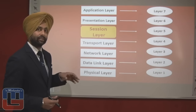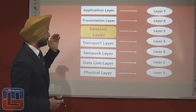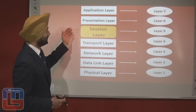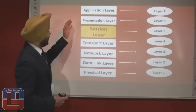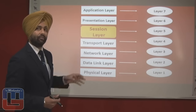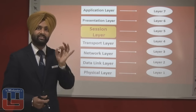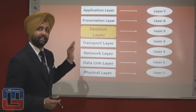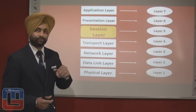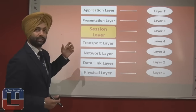Let's view the 7-layer architecture of the OSI model and see where the session layer is located. The first layer is the physical layer, the second is the data link layer, the third is the network layer, the fourth is the transport layer, the fifth is the session layer — our topic for today — the sixth is the presentation layer, and the seventh is the application layer. The reason for showing this figure in each session is to help you memorize the bottom-to-top approach.